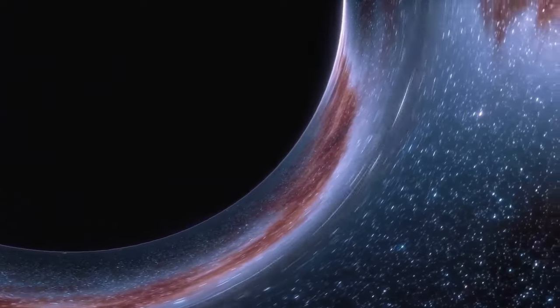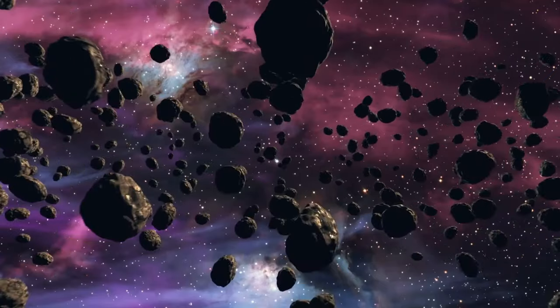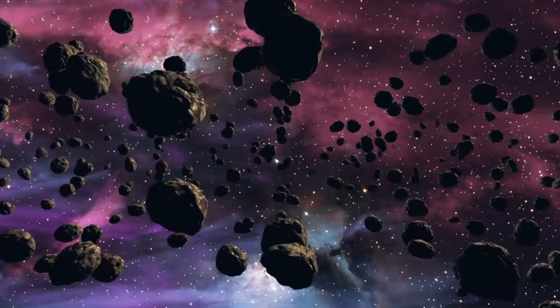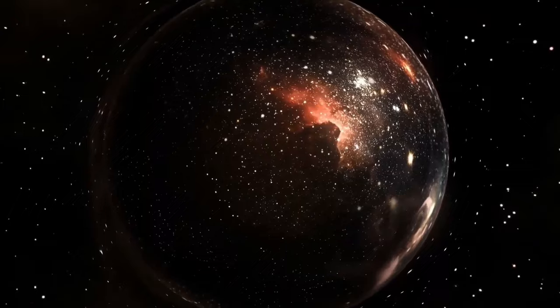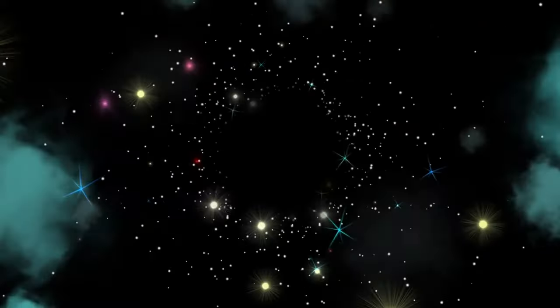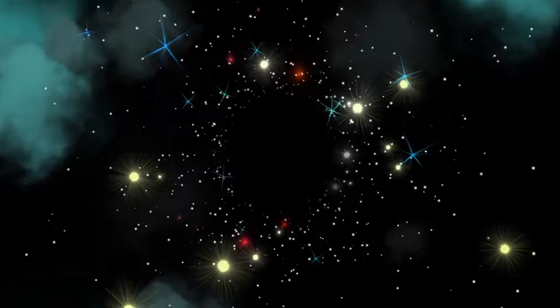Surrounding this point is the event horizon, the boundary beyond which nothing can return to the observable universe. It's here, at the edge of this void, that light and matter are trapped in an eternal prison, making black holes appear as invisible voids in the fabric of space.